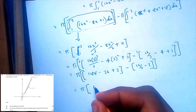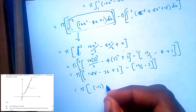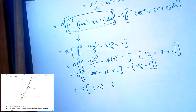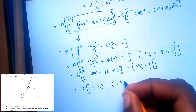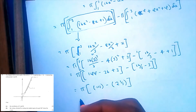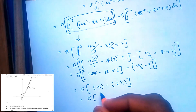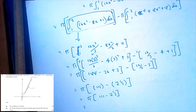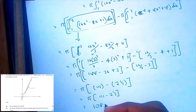So that is pi times 111 minus 21 over 3. Since 16 over 3 minus 3 equals 7 over 3, it gives pi times 111 minus 7 over 3. Computing: 108 plus 3 is 111, and 111 minus 21 and 1 third equals 108 and 2 thirds. So this equals 108 and 2 thirds pi.